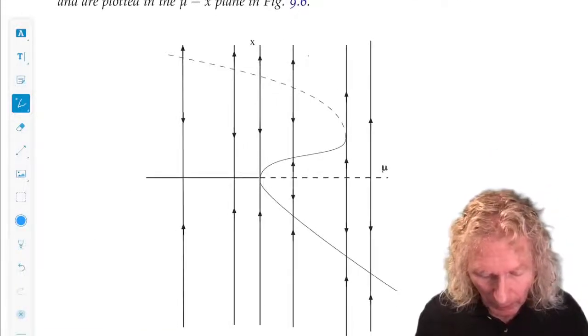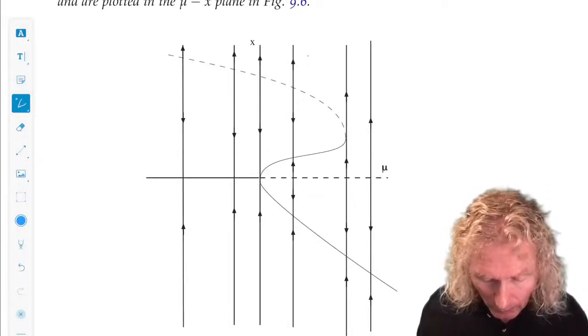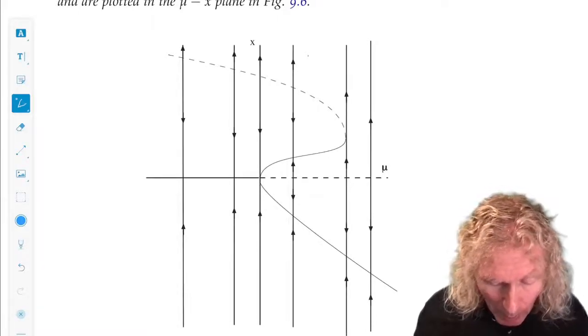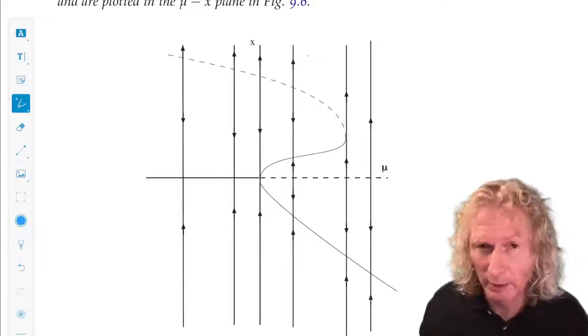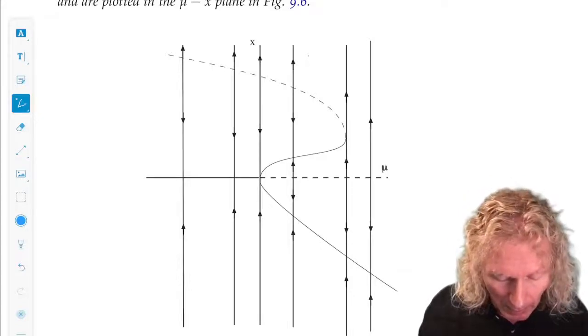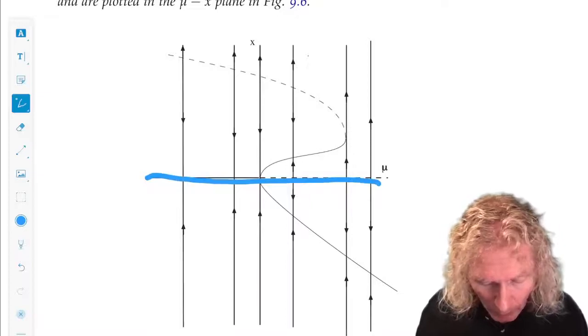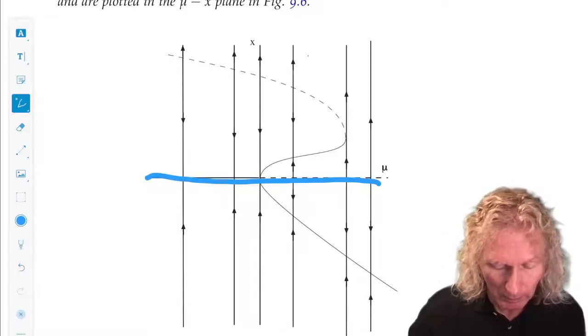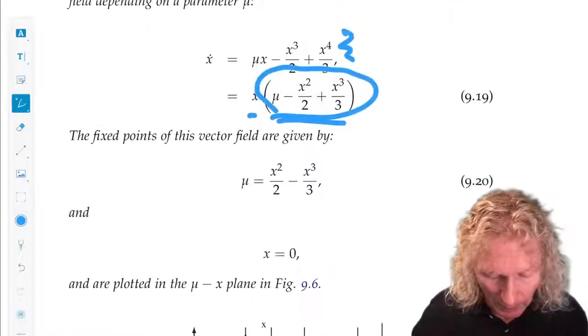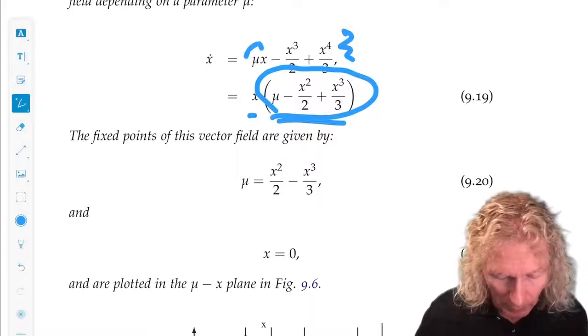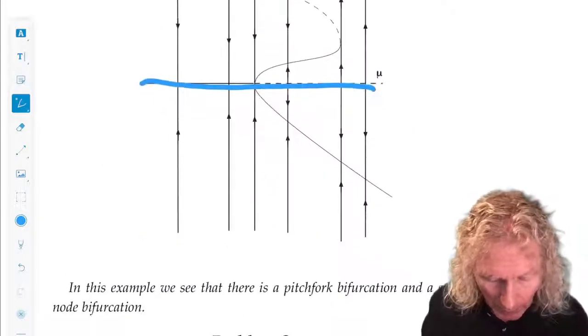I have the same curve as in the previous one, but now I have x equals zero. If you check it, it's easy to see that mu x is the leading order part. For mu negative, it's stable. For mu positive, it's unstable.